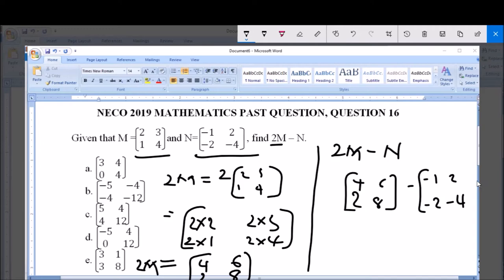minus 4. So, now, let's evaluate. We have to subtract N from 2M. We have 4 minus—now, each of these, we subtract its own corresponding sides. So, we have 4 minus minus 1, 2 minus minus 2. Then here, we have 6 minus 2, and 8 minus minus 4.